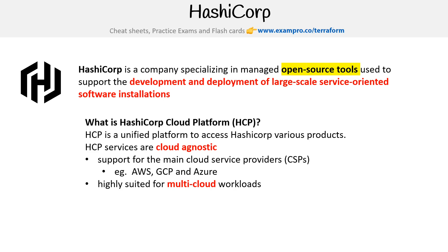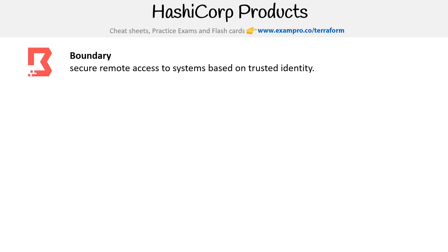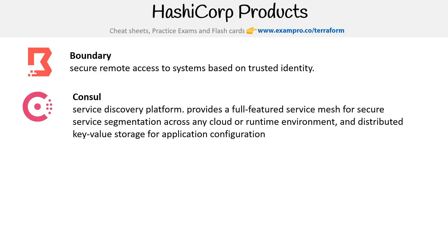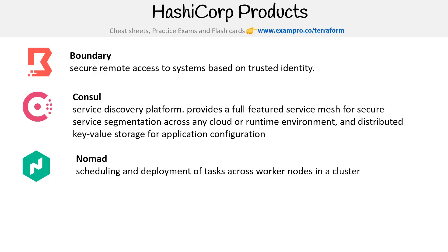They have a lot of products that will help you out there, so let's go through them quickly. First, we have Boundary — this is secure remote access to systems based on trusted identity. Then there's Consul, which is a full-featured service mesh for secure service segmentation across any cloud or runtime environment. You have Nomad, which is for scheduling and deployment of tasks across worker nodes in a cluster.